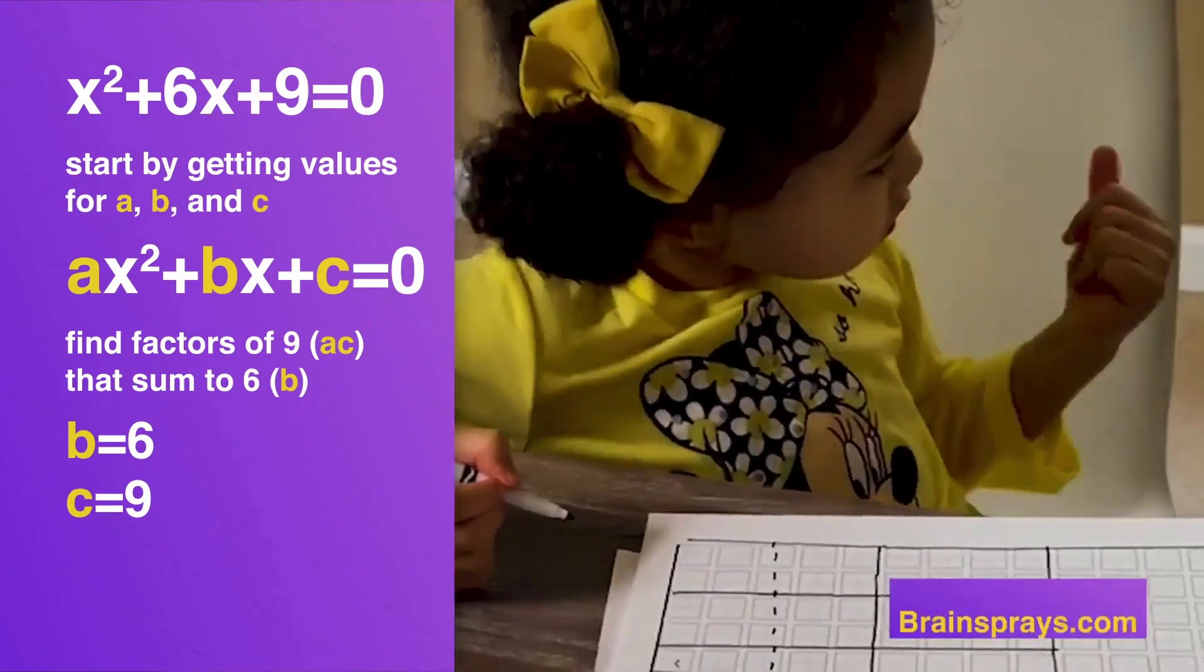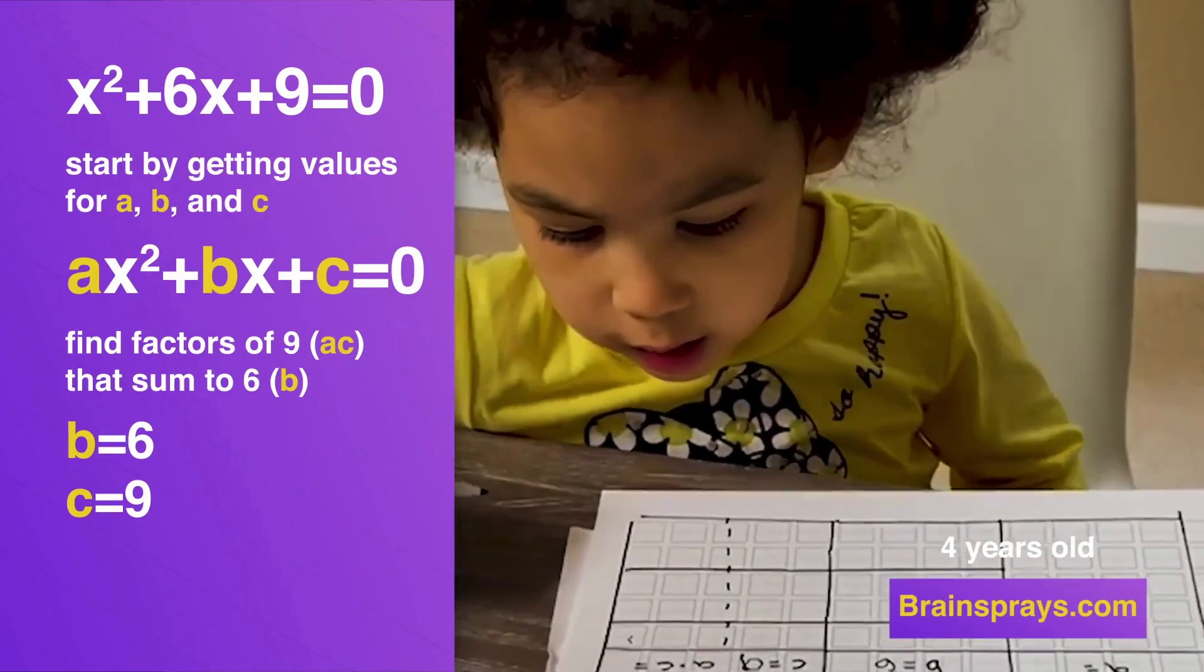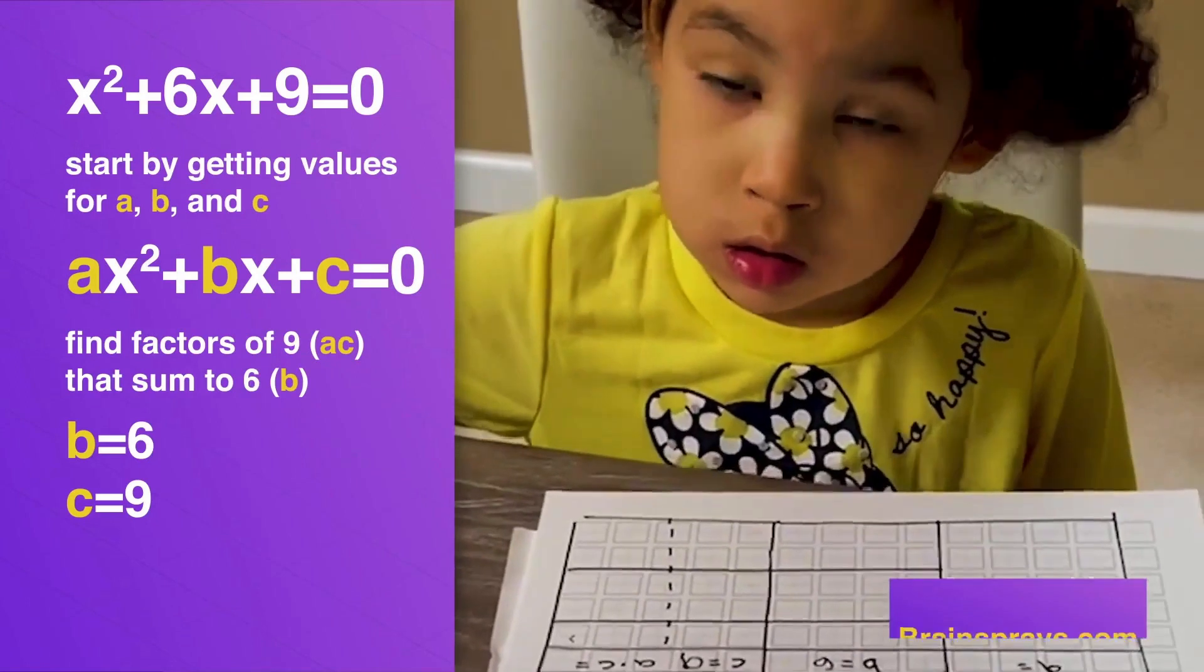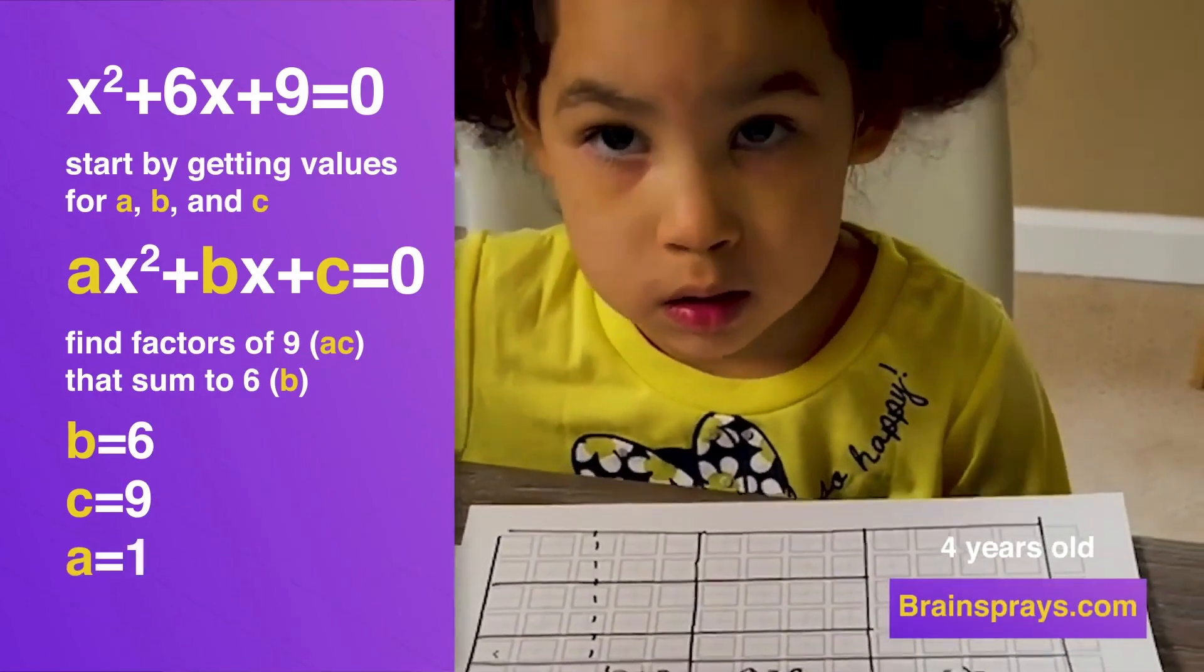What was that at the end? Keep going. Focus. A times C. What does A equal? 1. Write that down so you remember.